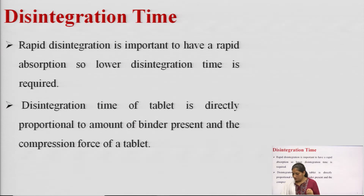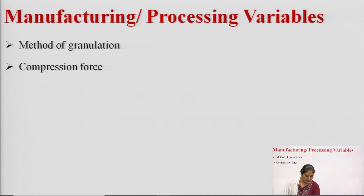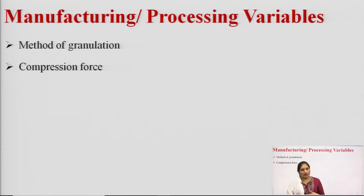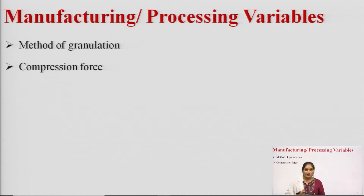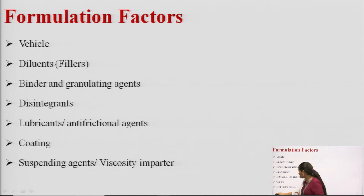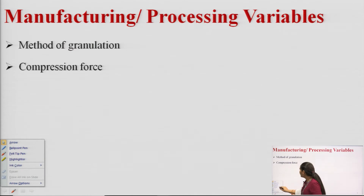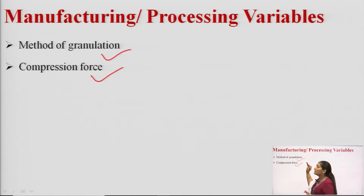Next is the manufacturing or processing variables. Drug dissolution is the single most important factor in drug absorption, especially for tablets or capsules. Dosage form related factors that can affect dissolution include the types of excipient and manufacturing processes. The two main manufacturing factors are the method of granulation and the compression force.